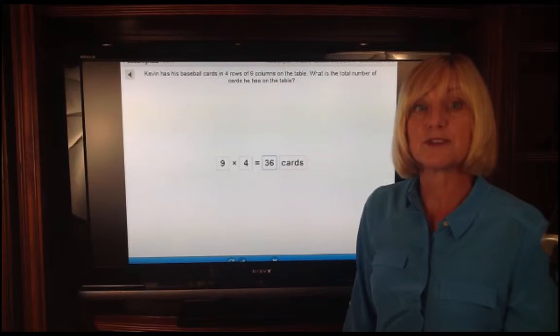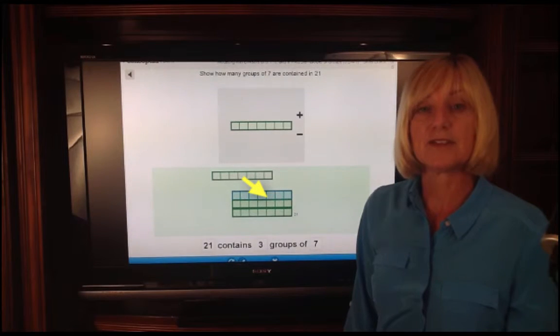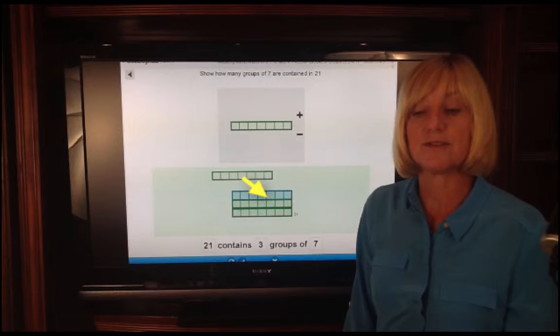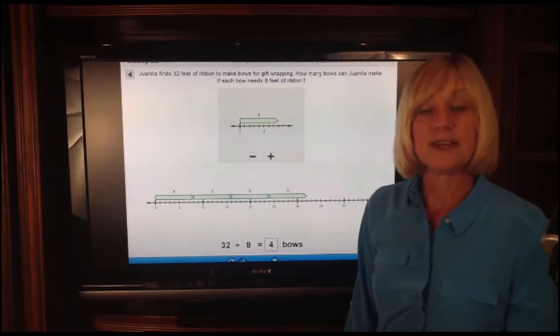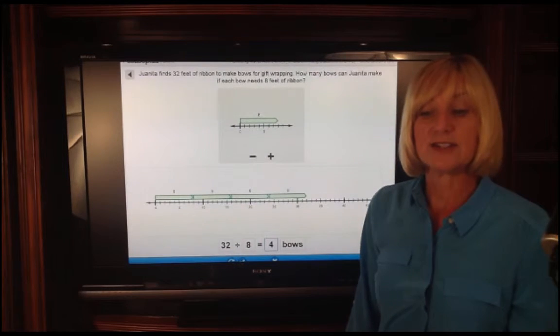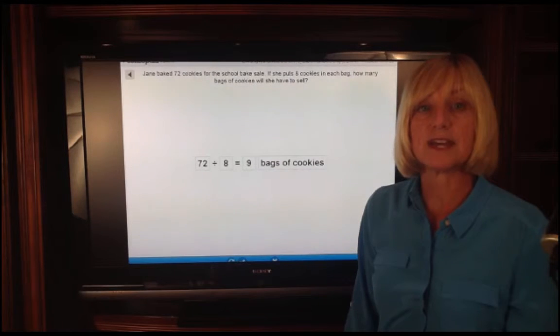In week number four, they come back to linking those new problems, which were sevens, eights, and nines, the most difficult facts, to division. In this case, 21 contains three groups of seven. They move from the phrases into numbers, with and without context, and numbers only at the end of the third week.